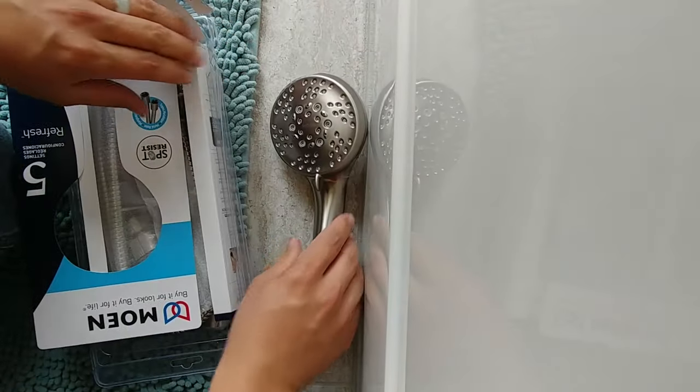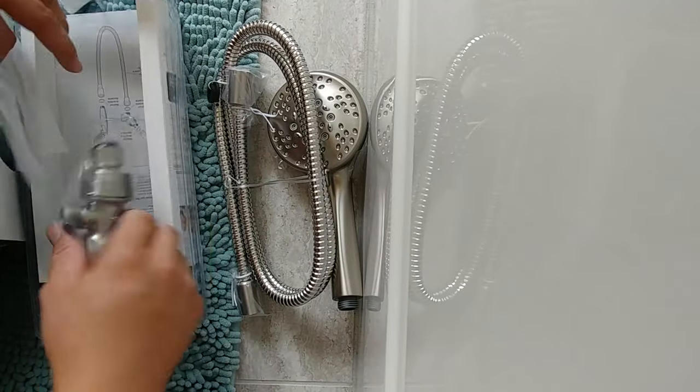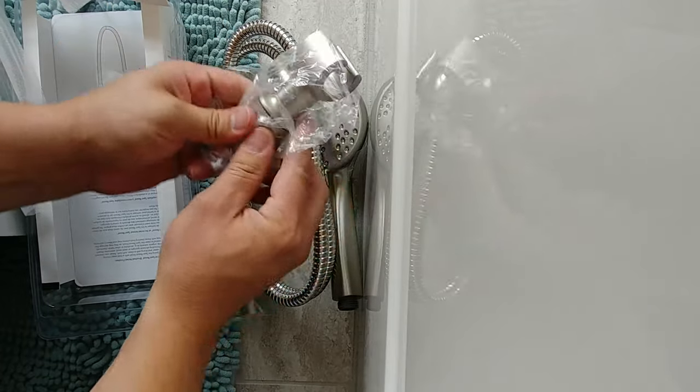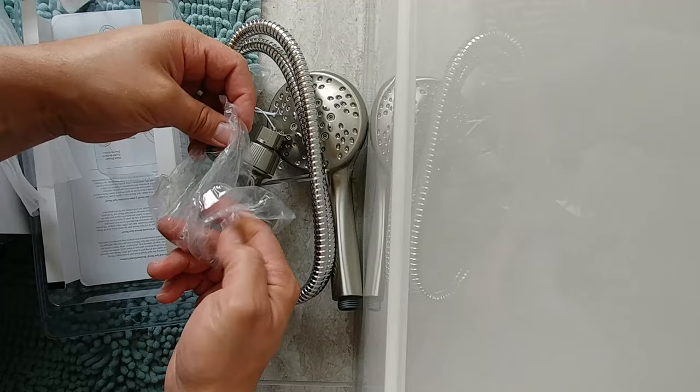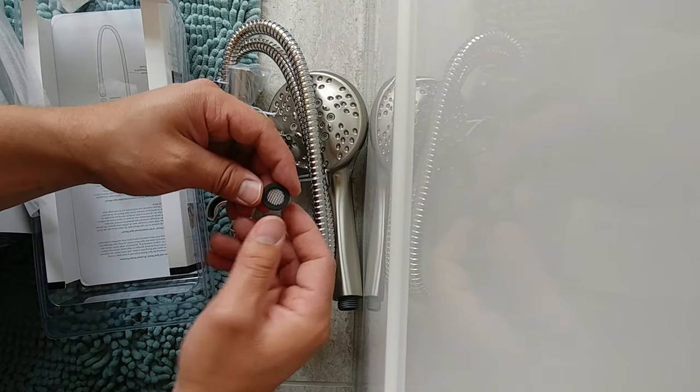Get this open here. We got the handheld shower head itself, the hose, and the mounting bracket that goes onto the shower arm coming out of the wall. Pretty simple as far as what we got here. And we got one little gasket with a screen in it.